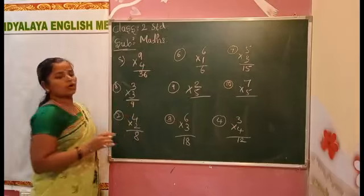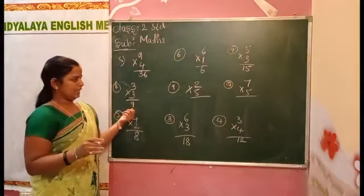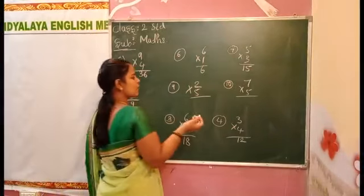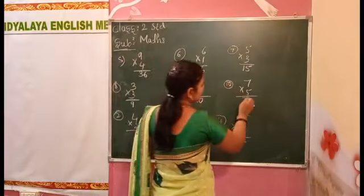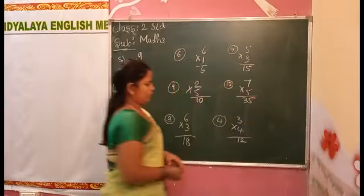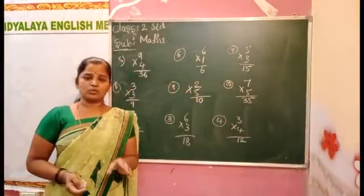Three threes are nine. Two fives are ten. Seven fives are thirty-five. Okay, students, practice tables must and should.